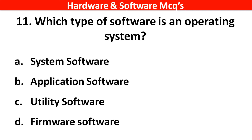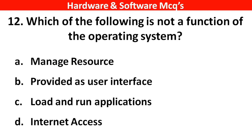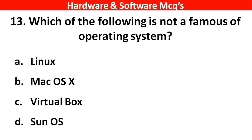Next question: Which type of software is an operating system? The right answer is option A — system software. Next question: Which of the following is not a function of the operating system? The right answer is option D — internet access. Next question: Which of the following is not a function of the operating system? The right answer is option C — Virtual Box.